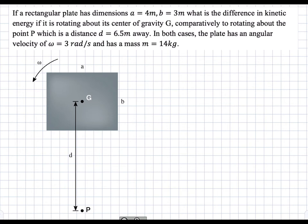In this case, we're just going to split it off into two different scenarios and calculate the kinetic energies and then subtract the two to find the difference in kinetic energy. We're going to look at first the case about which it's spinning about the center of gravity. So case one is spinning about G.